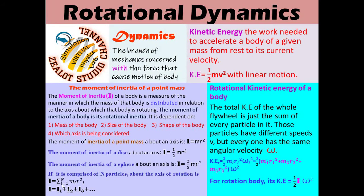For n number of particles, the total moment of inertia is the sum: m₁r₁² + m₂r₂² + m₃r₃² and so on. The total moment of inertia equals I₁ + I₂ + I₃ + … This is the total moment of inertia of n particles about a fixed axis of rotation.